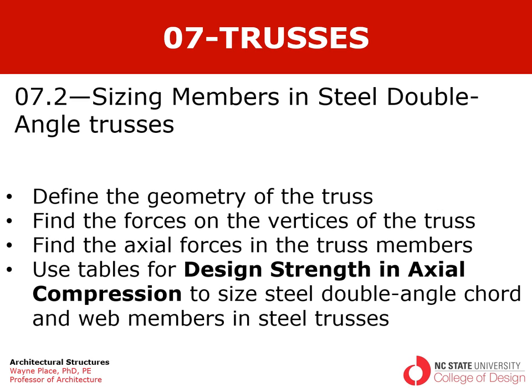As we will learn, often the web members may be solid rods or single angles, but for the purpose of this particular exercise we're going to assume that all members in the truss are double angles, and then we'll talk about what the implications are if they aren't.